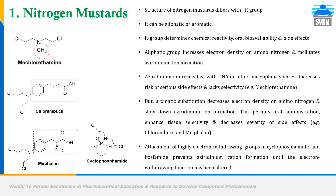Let's begin with the subtypes of alkylating drugs. There are three subtypes: nitrogen mustard, aziridine, and methane sulfonate ester. Nitrogen mustard is derived from World War I. This nitrogen mustard compound is similar to sulfur mustard — the bioisosteric replacement of sulfur with nitrogen gives a nitrogen mustard compound. Nitrogen mustard examples include mechlorethamine, chlorambucil, melphalan, and cyclophosphamide.